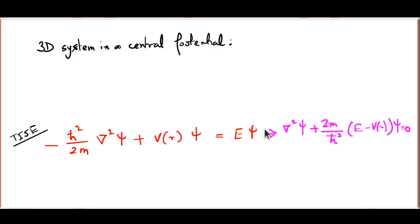The focus in this lecture is going to be on 3D systems in a central potential. We will start as always with the time-independent Schrödinger equation, written in red here. Because we are in three dimensions, the second spatial derivative gets replaced by the Laplacian. Because we are using a central potential, the potential energy is a function not of x, y, z or r, theta, and phi in spherical polar coordinates, but only of r. The potential is spherically symmetric.